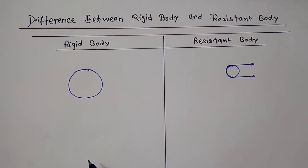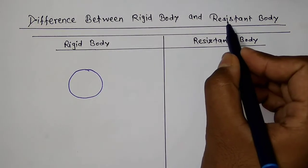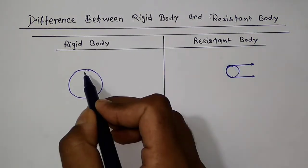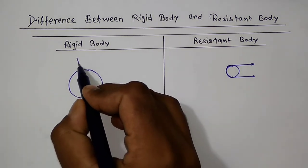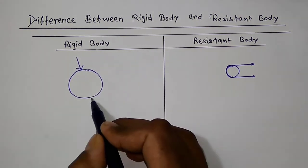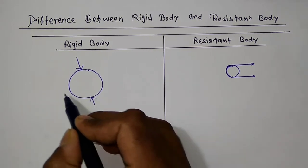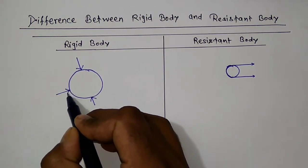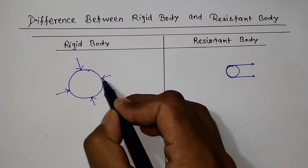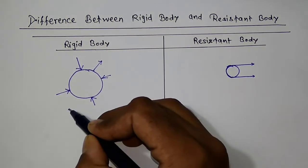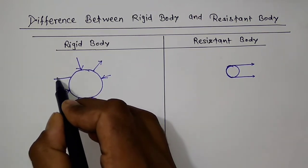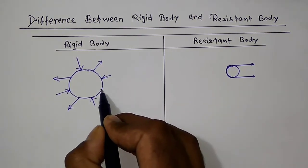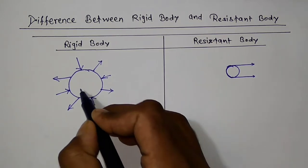Hello friends, in this video we will discuss the difference between rigid body and resistant body. Let us draw a body. There are so many forces acting on the body — this is compressive force and this is tensile force. Tensile force and compressive force are acting on the body.